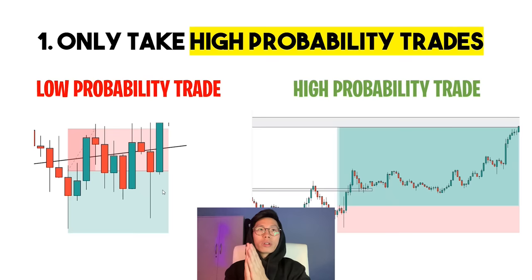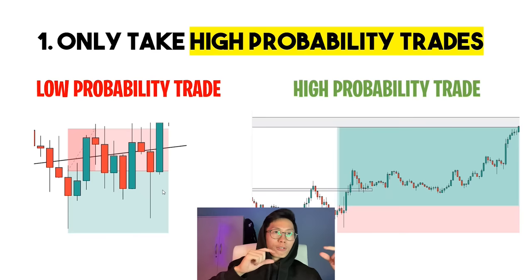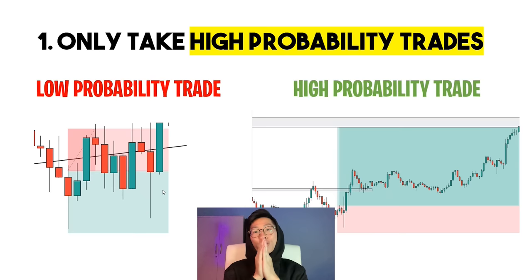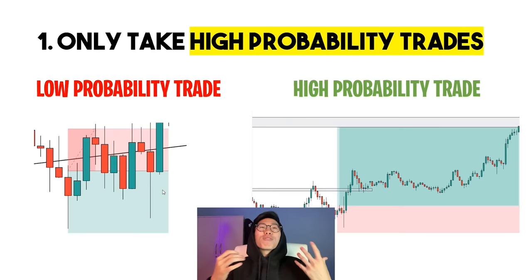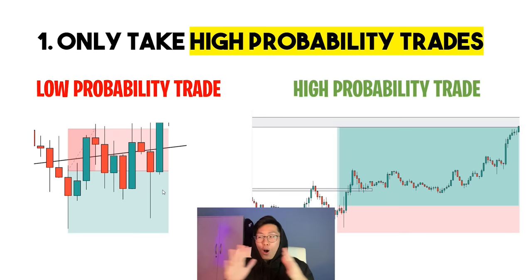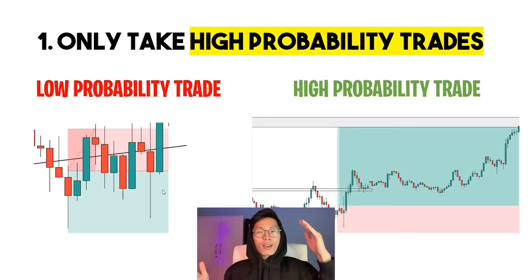The more confluences, the higher the probability of winning. Confluences include things like candlestick patterns, market structure, trend lines, and support and resistance levels. A low probability trade would be trading during consolidation or when there are very low trading volumes with small candlesticks. If you've been trading for a while, you probably have a gut feeling on whether you're going to win or lose a trade — sometimes you just have to trust that feeling.